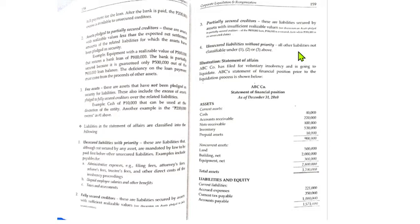Let's look at the illustration: ABC has filed for voluntary insolvency and is going to liquidate. ABC's statement of financial position prior to liquidation is shown as of December 31, 20X0. It has current assets and non-current assets totaling 3.7 million, including cash, accounts receivable, notes receivable, inventory, prepaid assets, land, building (net of accumulated depreciation), and equipment.